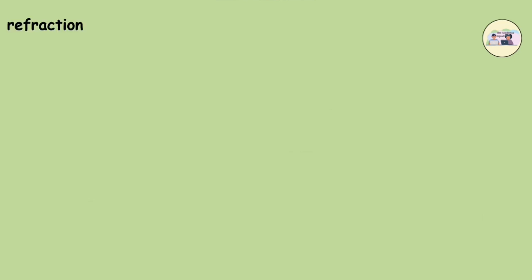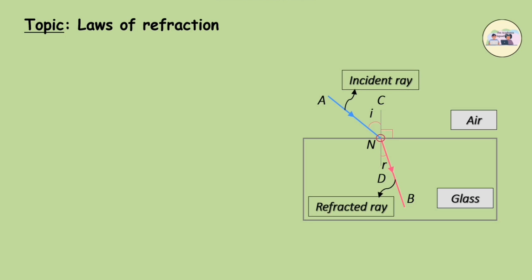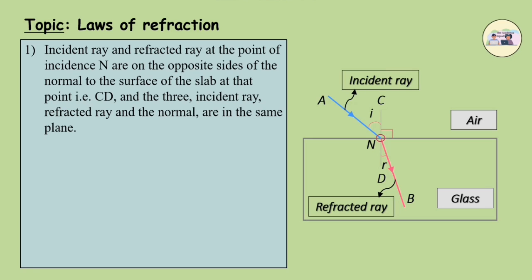Laws of refraction. Let us study the light ray entering a glass slab from the air as shown in the figure. Here AN is the incident ray and NB is the refracted ray. First, the incident ray and refracted ray at the point of incidence N are on the opposite sides of the normal to the surface of the slab at point CD. And the three—incident ray, refracted ray, and the normal—are in the same plane.